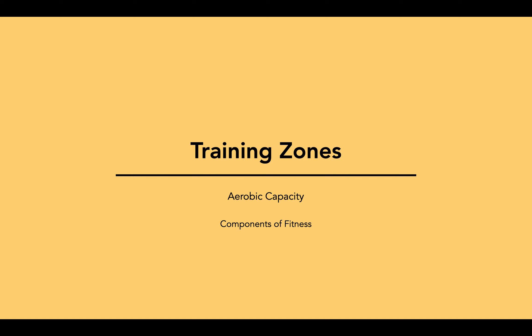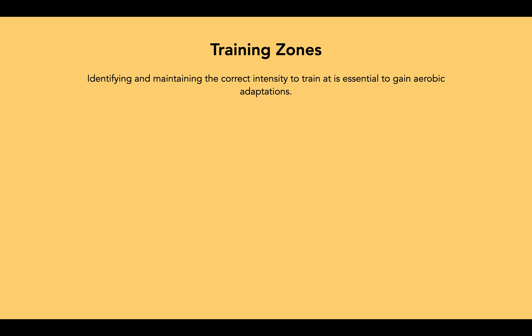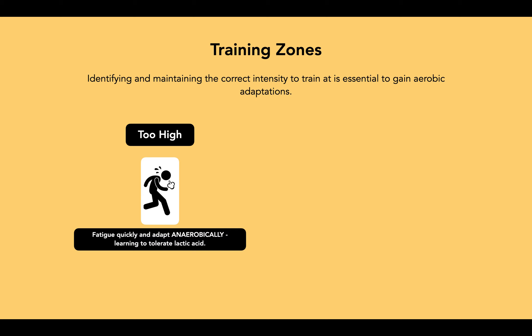Mr. Watson here, and in this video we're going to look at the training zones and how they can affect aerobic capacity. Identifying and maintaining the correct intensity to train at is essential to gain aerobic adaptations. If the intensity is too high, the performer may fatigue quickly and adapt anaerobically — for example, learning to tolerate lactic acid. Although that might be a worthwhile adaptation, that is not the aim we're looking for. We're looking to gain aerobic adaptations.